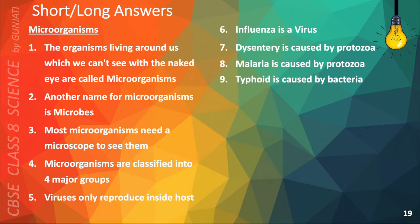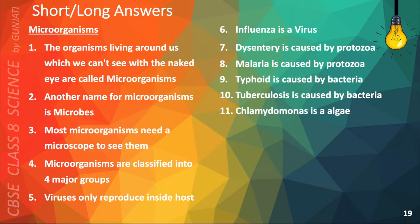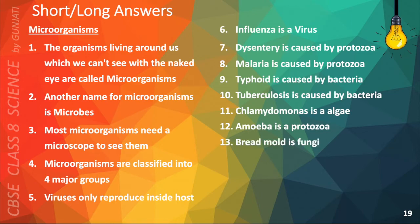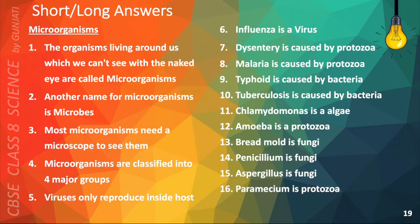Typhoid is caused by bacteria. Tuberculosis is also caused by bacteria. Chlamydomonas is an algae. Amoeba is a protozoa. Bread mold is fungi. Penicillium is fungi. Aspergillus is fungi. Paramecium is protozoa. Spirogyra is algae.